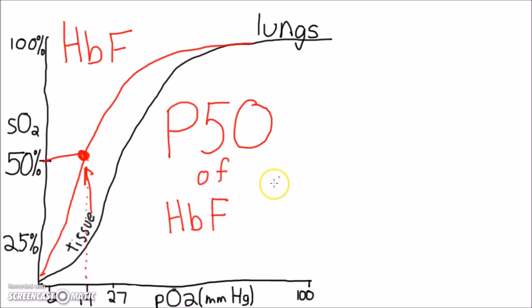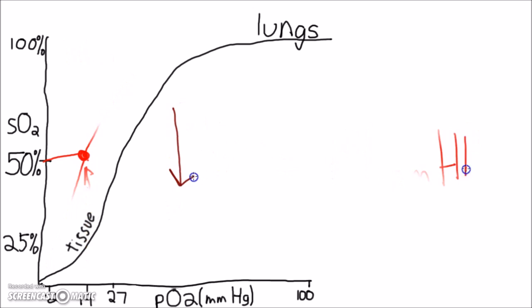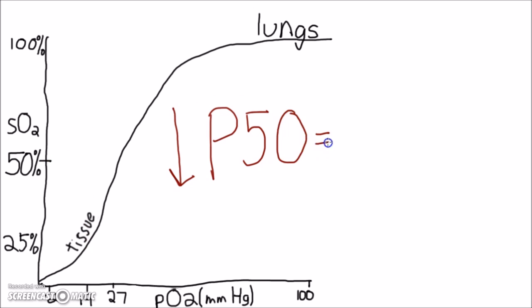The fetal hemoglobin holds the oxygen a little bit more tightly, such that at the same partial pressure, it will be more saturated. The P50 has an inverse correlation to the tightness of holding onto oxygen, so the very low P50 of myoglobin holds the tightest.